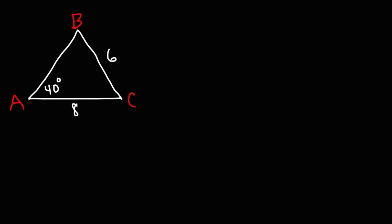Now let's work on another problem that is quite different from the first one. Feel free to pause the video if you want to try it. In the first example, we were given two angles and a side. In this example, we're given two sides and one angle. We know angle A and side A — side A is 6. We're given side B, but we don't know angle B, and we know nothing of C. So the first thing we need to do is calculate angle B.